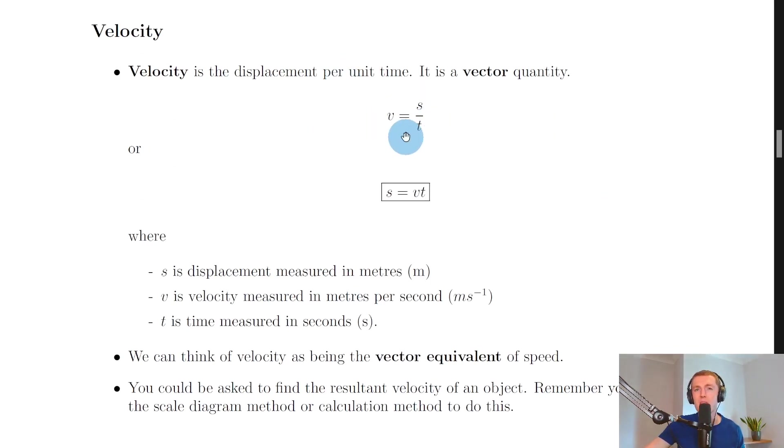We can say that velocity is equal to the displacement divided by time because if we're thinking about the vector equivalent of speed being velocity then we have to think about the vector equivalent of distance which is displacement s.